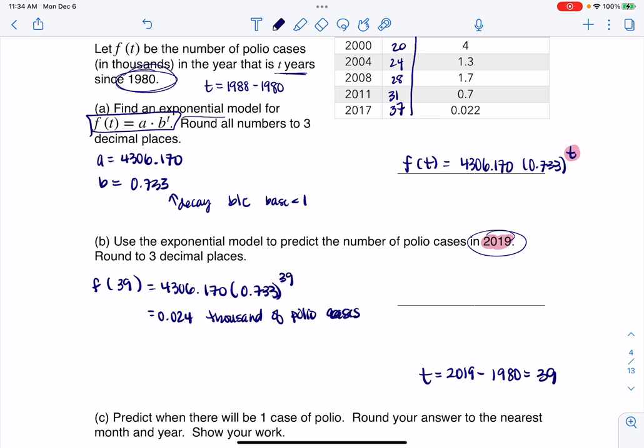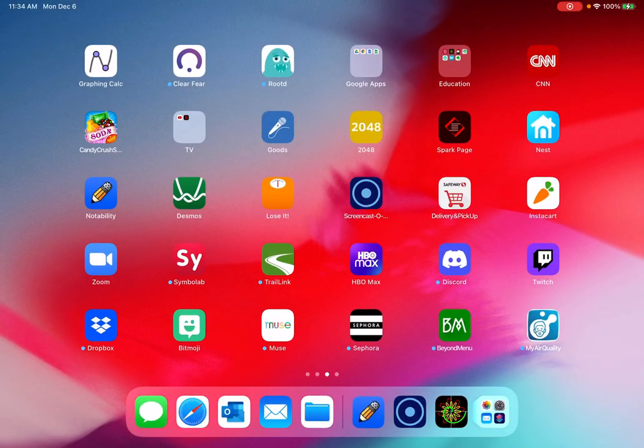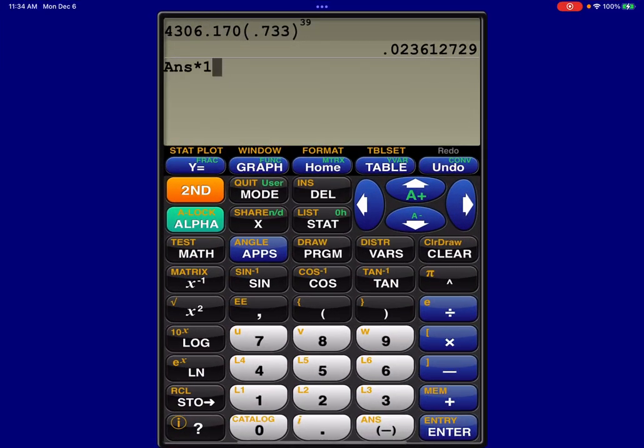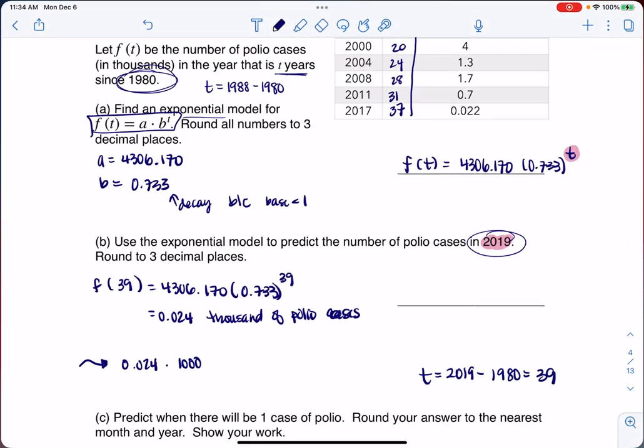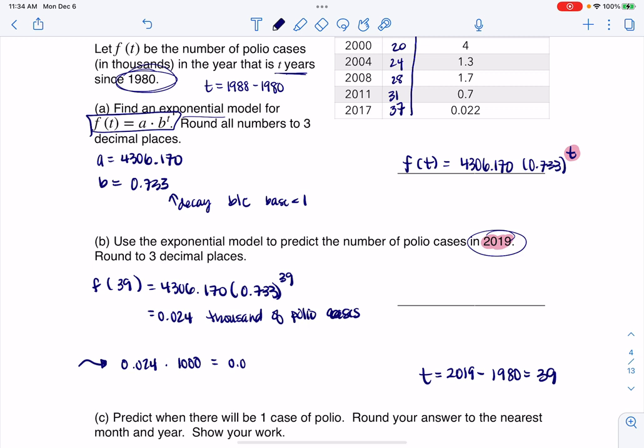If you want to find out how many cases it actually is, multiply it by 1,000. If I take 0.024 and multiply that number by 1,000, it's actually pretty close to about 24 polio cases that year. Let me write 24. That's the number I wanted. 24 polio cases.